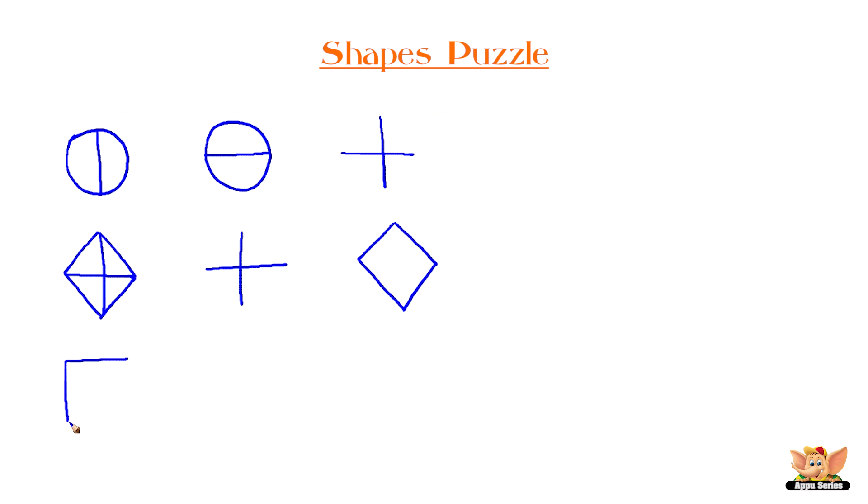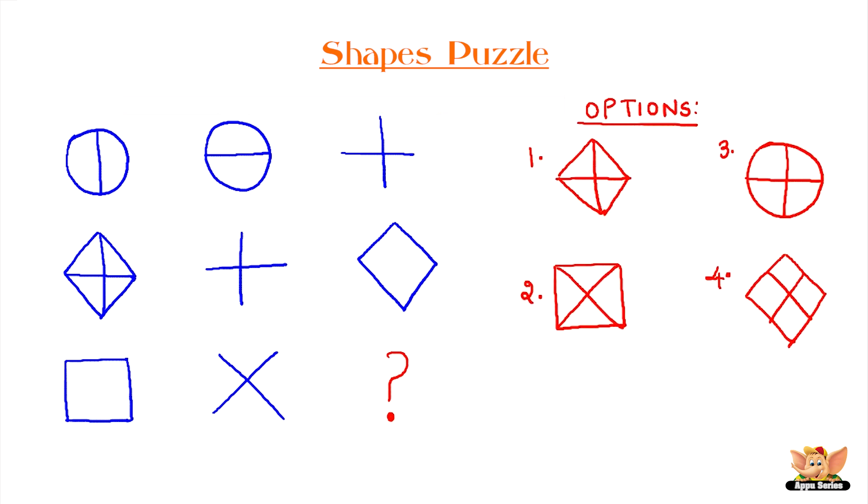Next we have a square. An X. Now what could be in the next place? To make it more simple you can choose from the options in red.